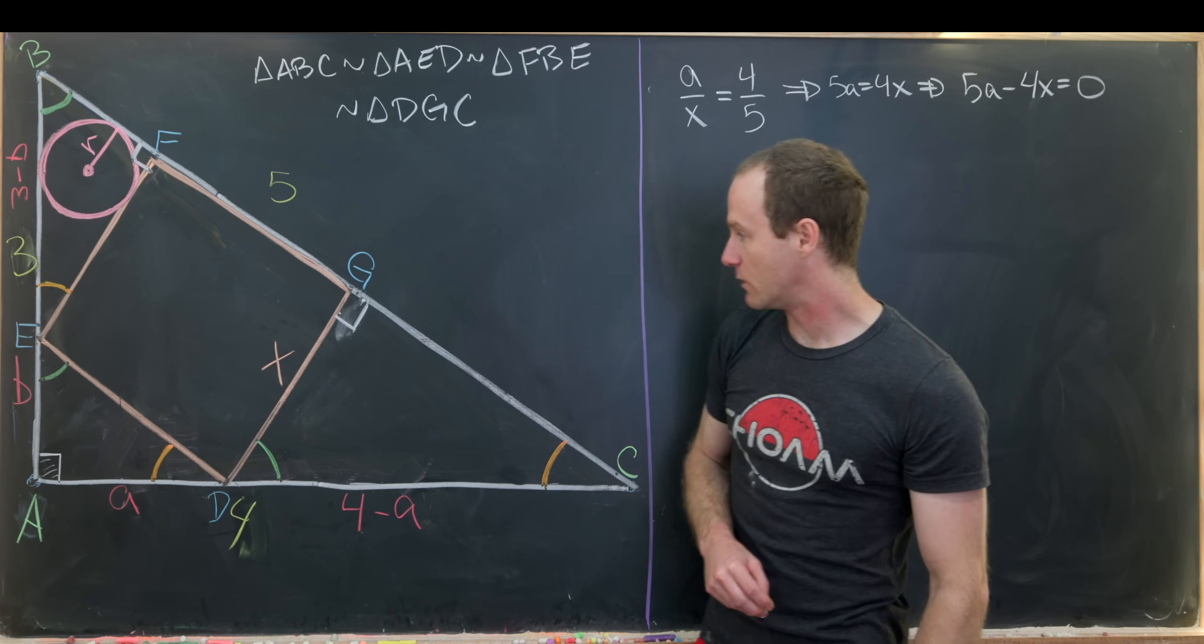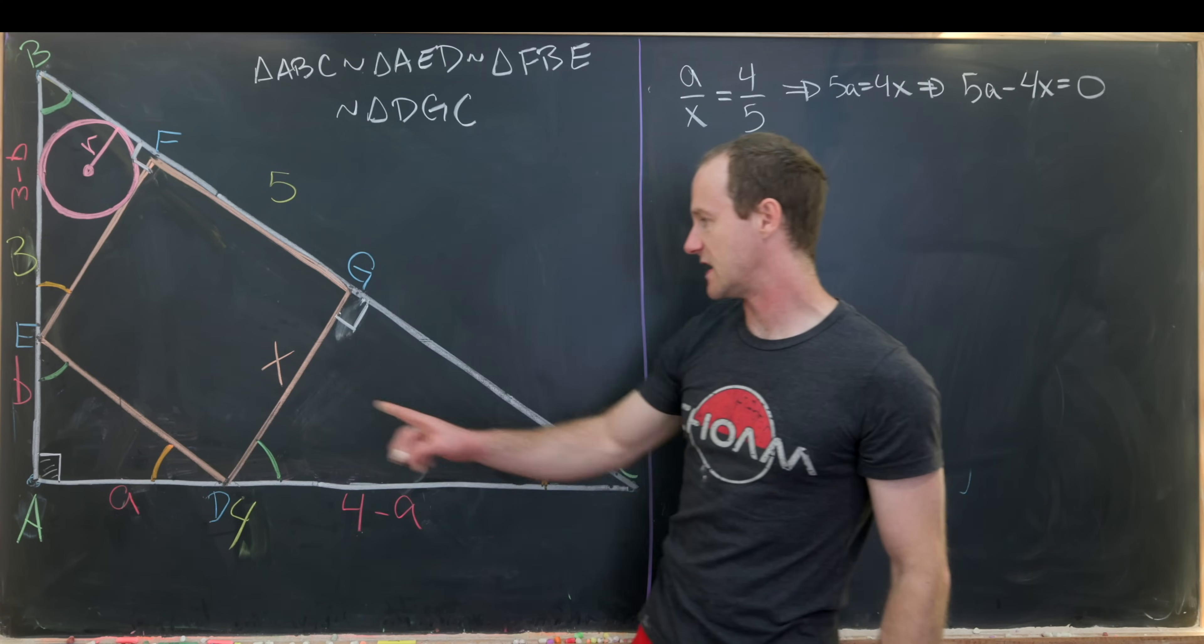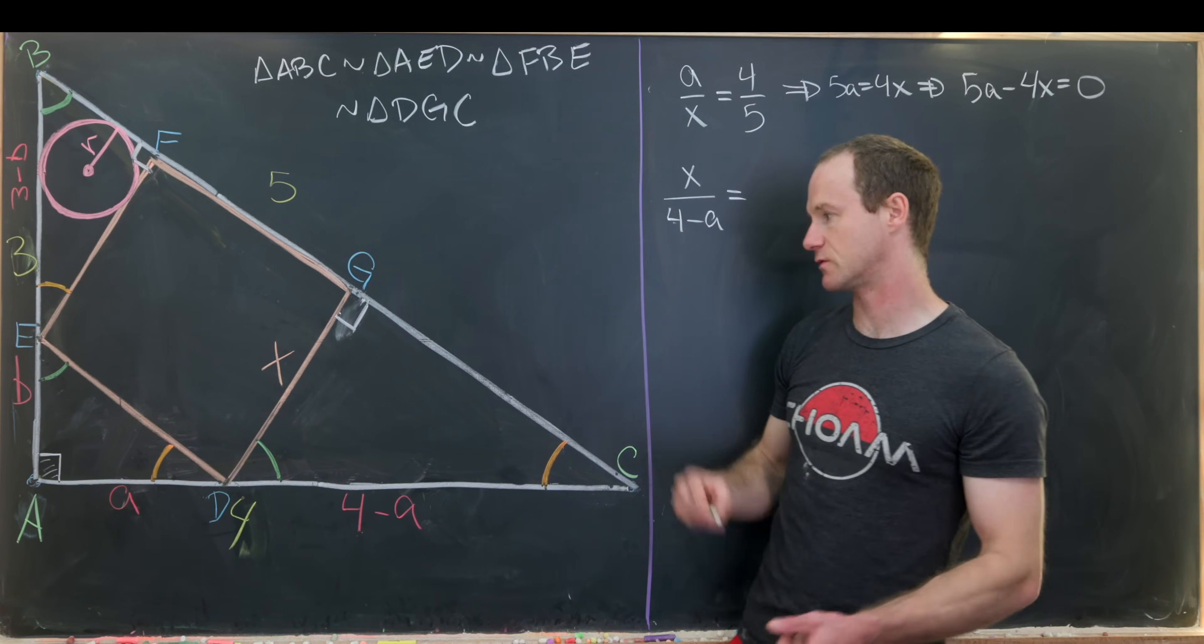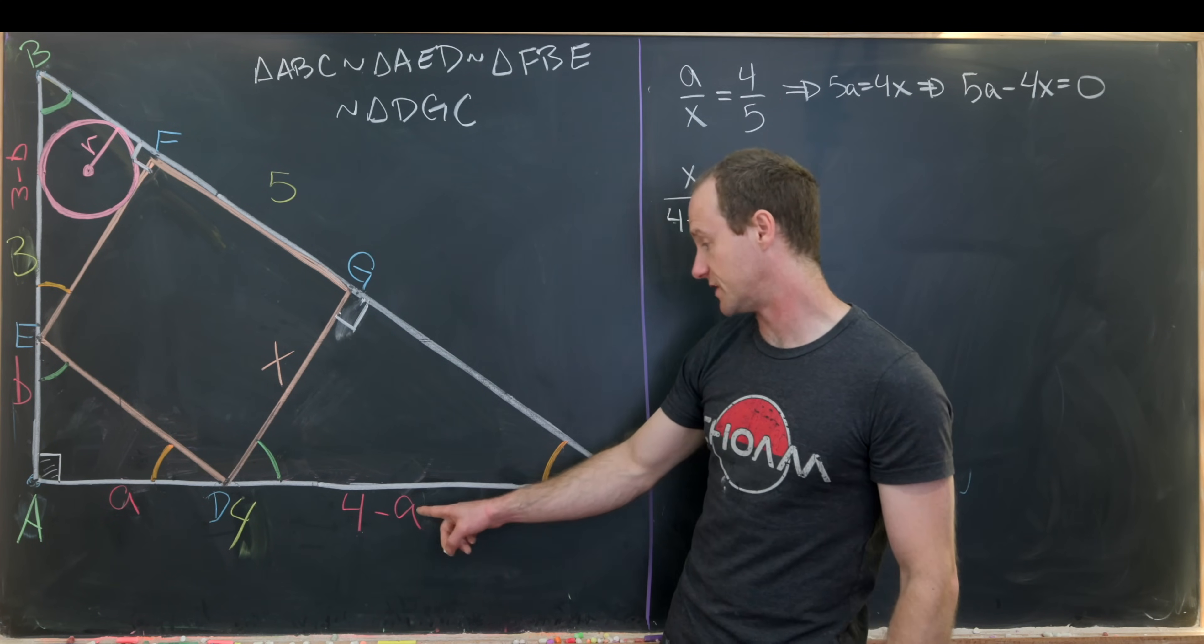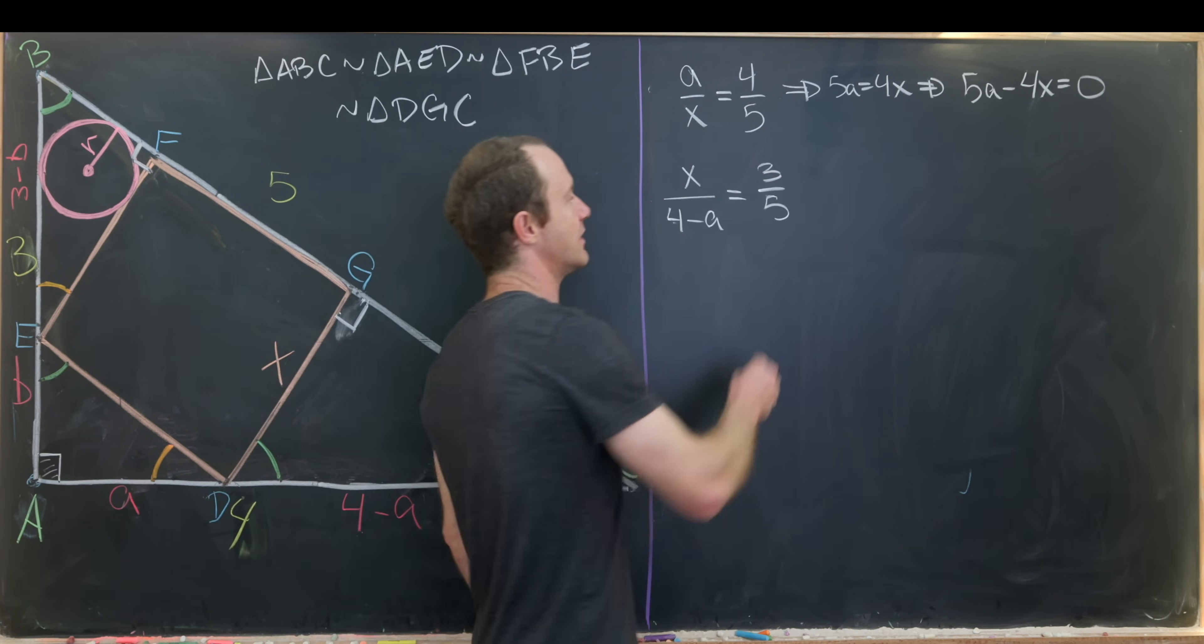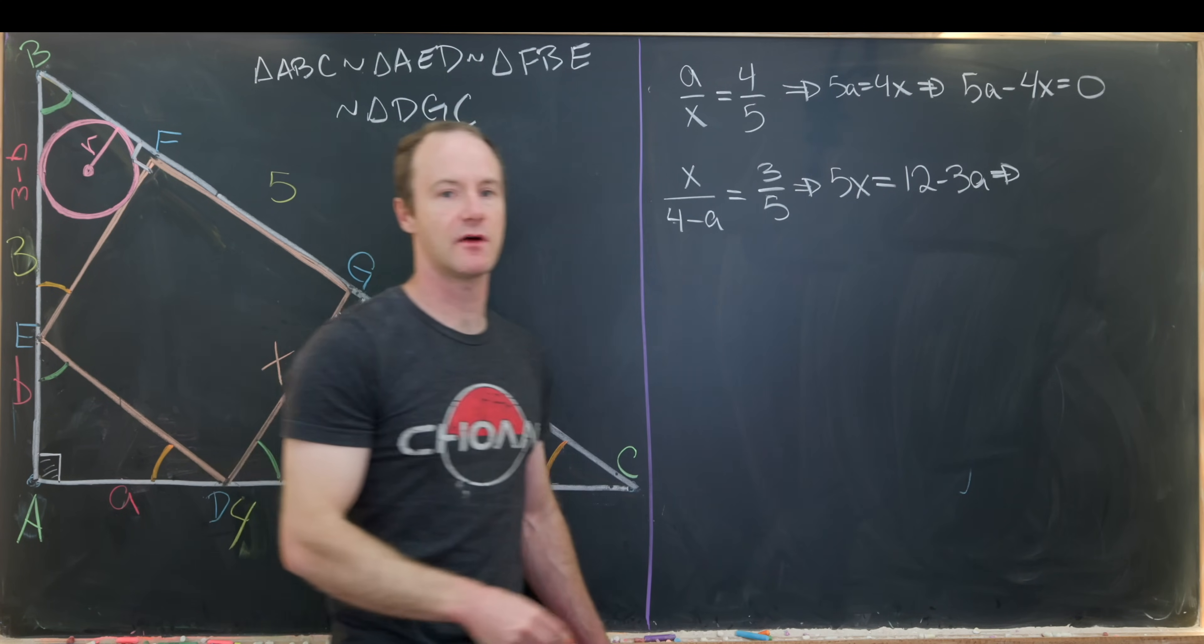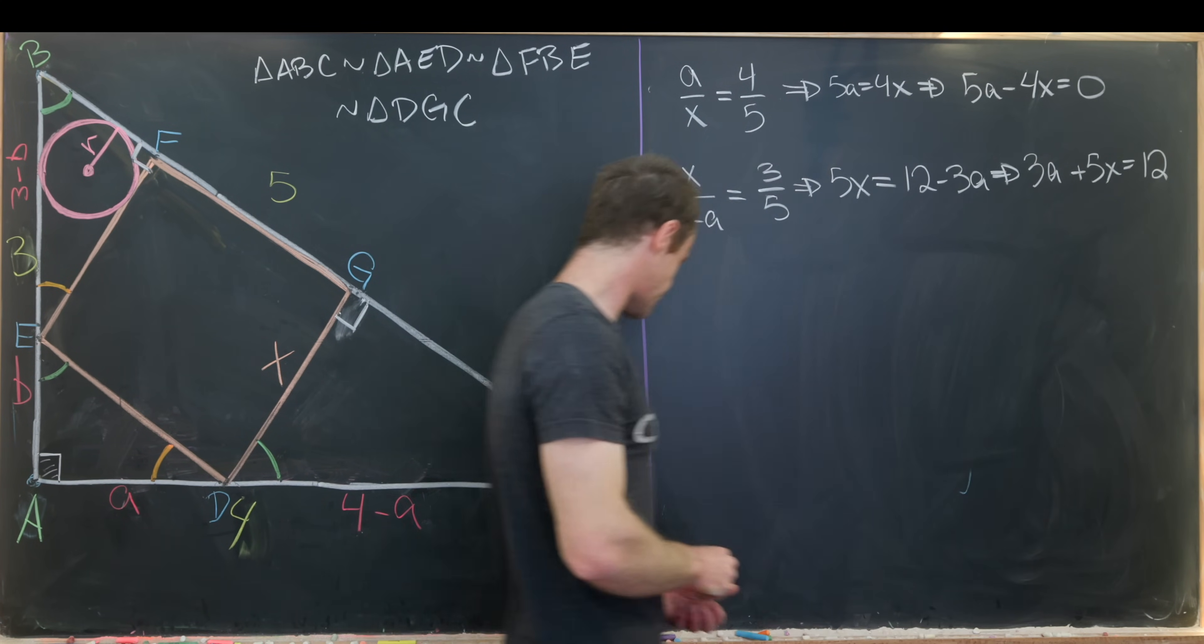Let's see if we can get another equation that involves a and x and nothing else. And in fact, we can get that from this triangle down here, DGC. So we can take x divided by 4 minus a, and that proportion should be equal to the resulting proportion of the large triangle. But x is the smallest side of this triangle, and this is the hypotenuse of this triangle. So this should be equal to 3 over 5. Now we can multiply this out pretty easily. We get 5x equals 12 minus 3a. We can move some things around and we'll see that 3a plus 5x equals 12.